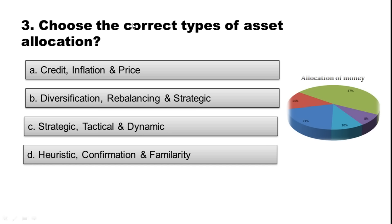Question 3: Choose the correct type of asset allocation. Option A: Credit, inflation and price. Option B: Diversification, rebalancing and strategic. Option C: Strategic, tactical and dynamic. Option D: Heuristic, confirmation and familiarity. The correct option is Option C — strategic, tactical and dynamic.